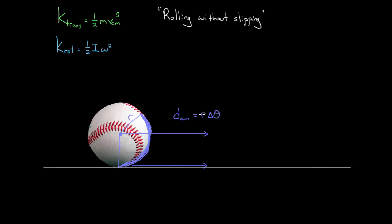Note that this is not true for every point on the baseball. A point at the top was both rotating around the center of mass while the center of mass was moving forward, taking a complicated curved path through space. But the center of mass itself was not rotating around the center of mass — it just travels in a straight line. That's why we can say the center of mass distance traveled equals the arc length traced out, which is like the length of paint on the ground.